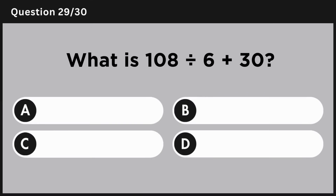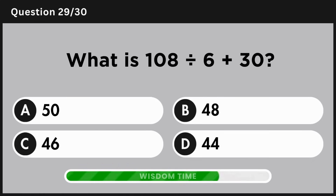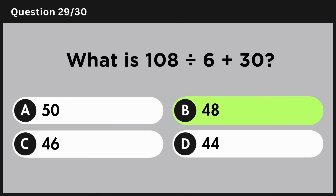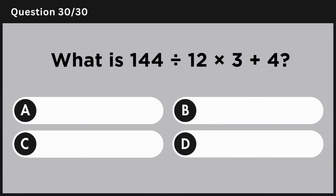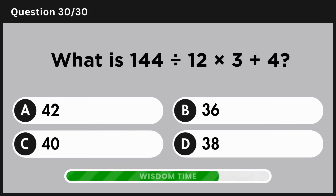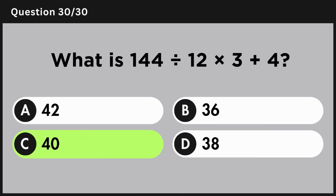What is 108 divided by 6 plus 30? Answer B: 48. What is 144 divided by 12 multiplied by 3 plus 4? Answer C: 40.